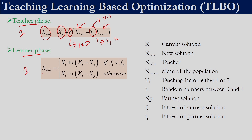In the learner phase we will be generating a new solution by selecting a partner from the population. If we are generating a solution for x_i, we need to select a partner from the population and use one of these equations. If the fitness of the i-th member is less than the fitness of the partner then we will use the first equation, else we will use the second equation. Again, r is a random number between 0 and 1 and this is also 1×d.